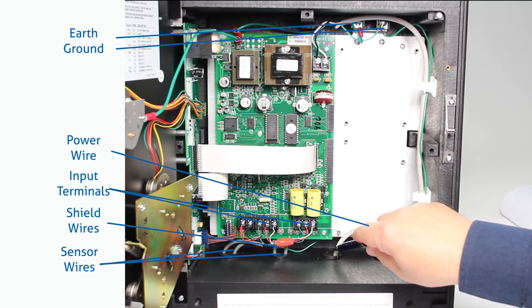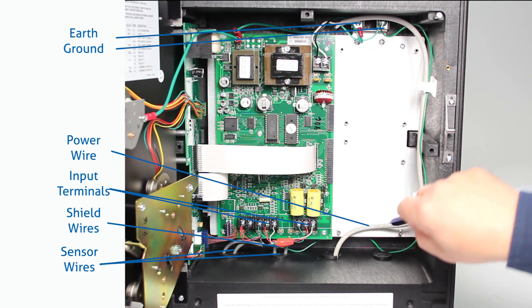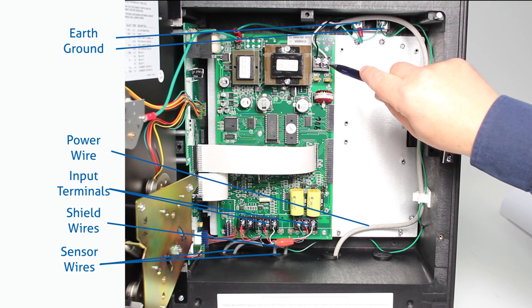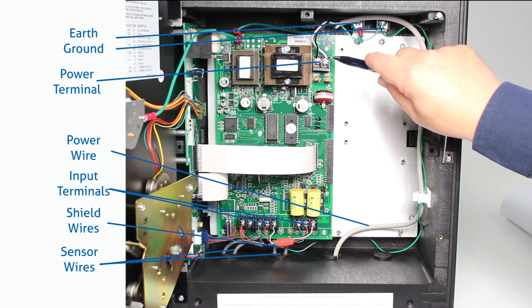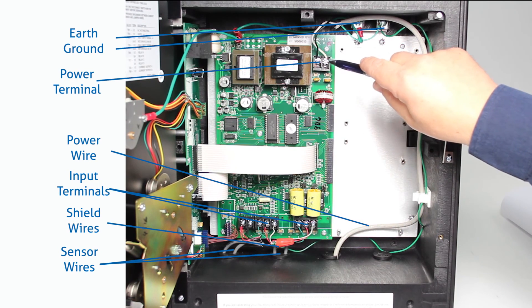Our power wire comes in through another separate rubber grommet here and that comes up and connects to TB1 on the motherboard next to the transformer. L1 gets connected to the left screw and L2 will be connected to the right screw.